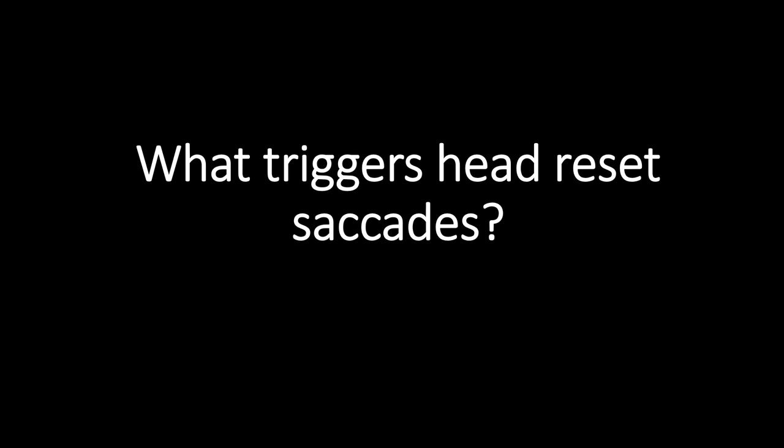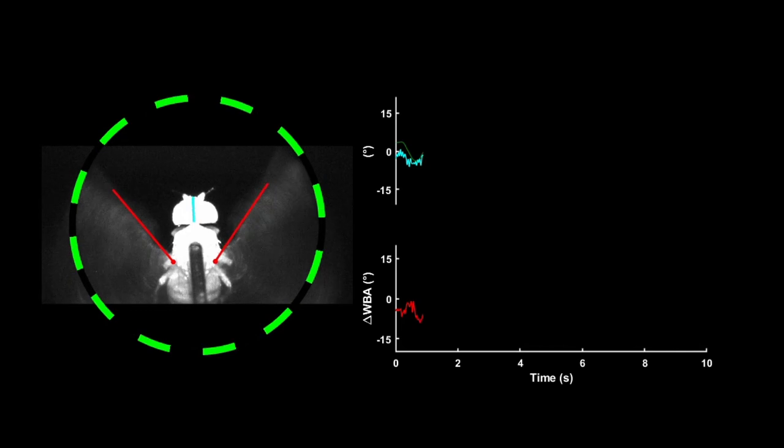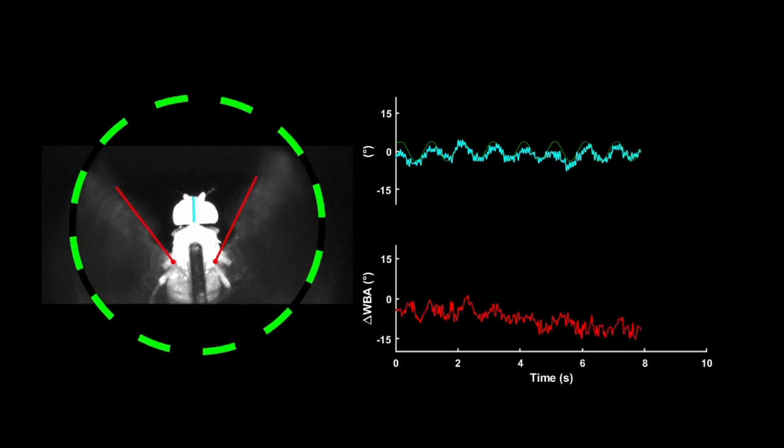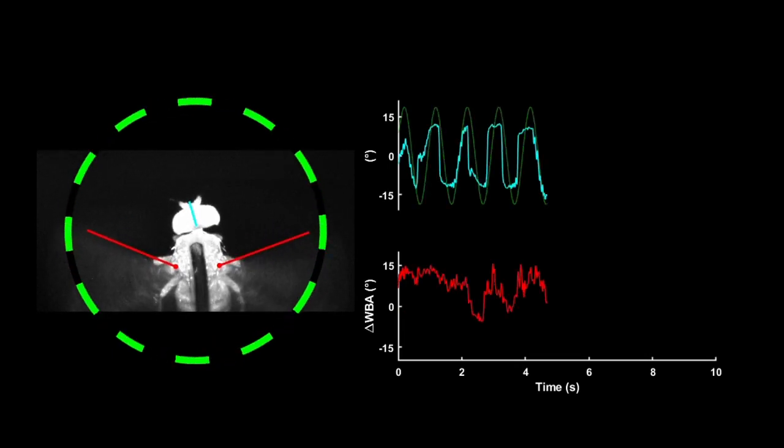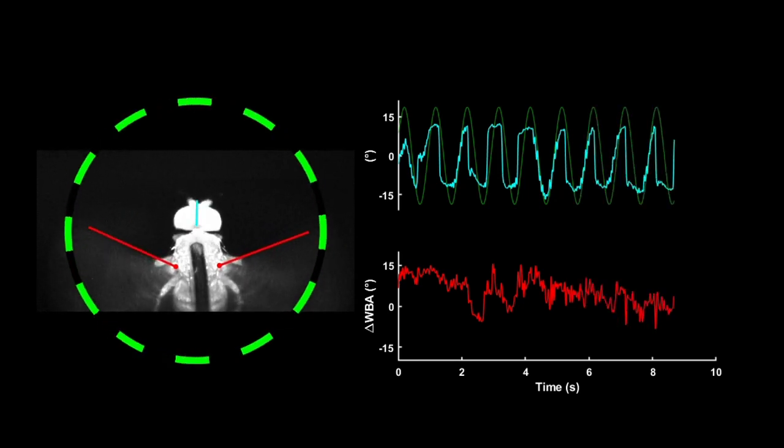So what triggers head reset saccades? We noticed that when we presented flies with visual perturbations that did not drive the head to its anatomical limits, flies rarely performed head reset saccades. However, when the visual perturbations were large enough to cause the head to reach larger excursions, flies performed reset saccades with much higher frequency.